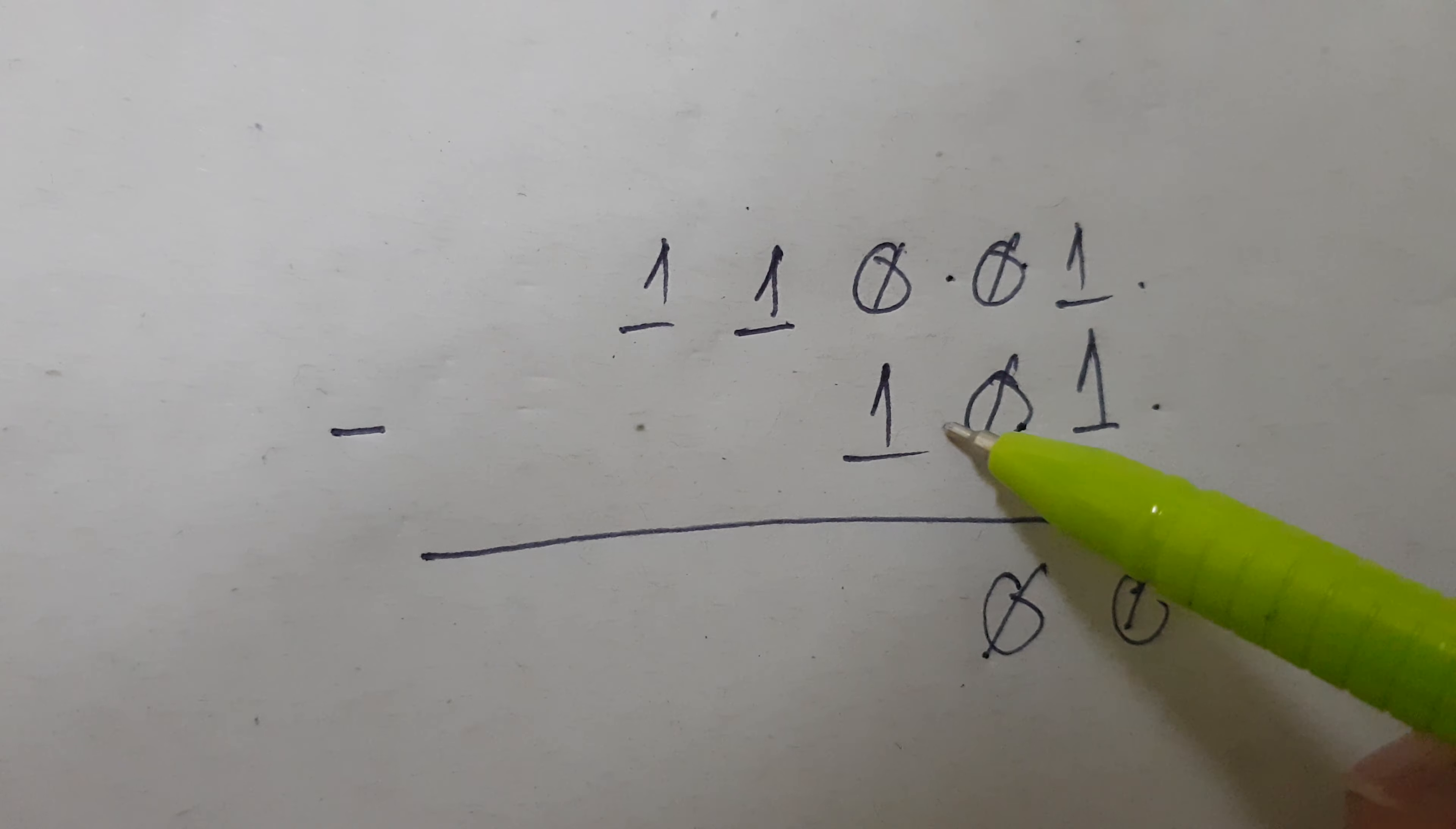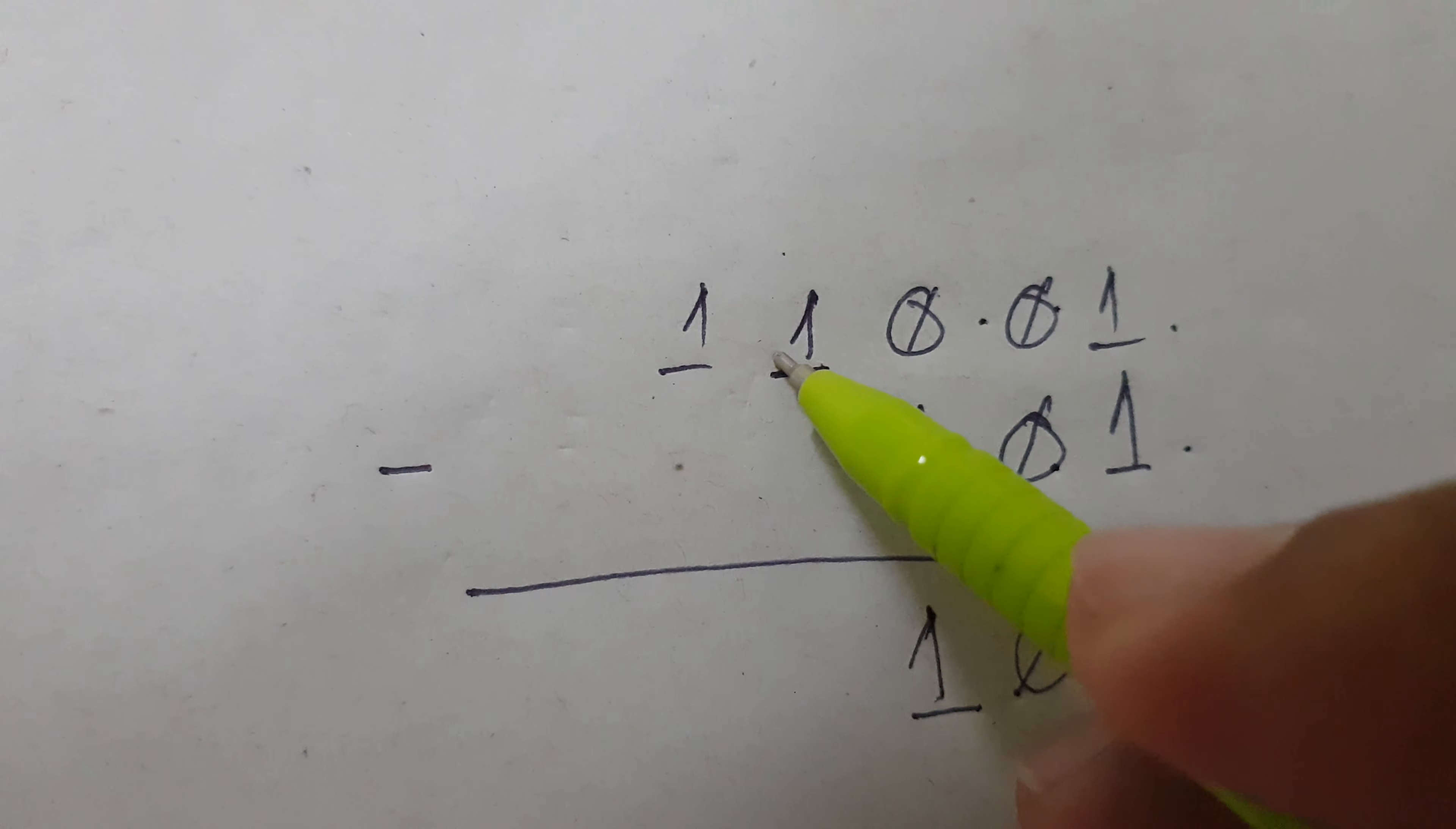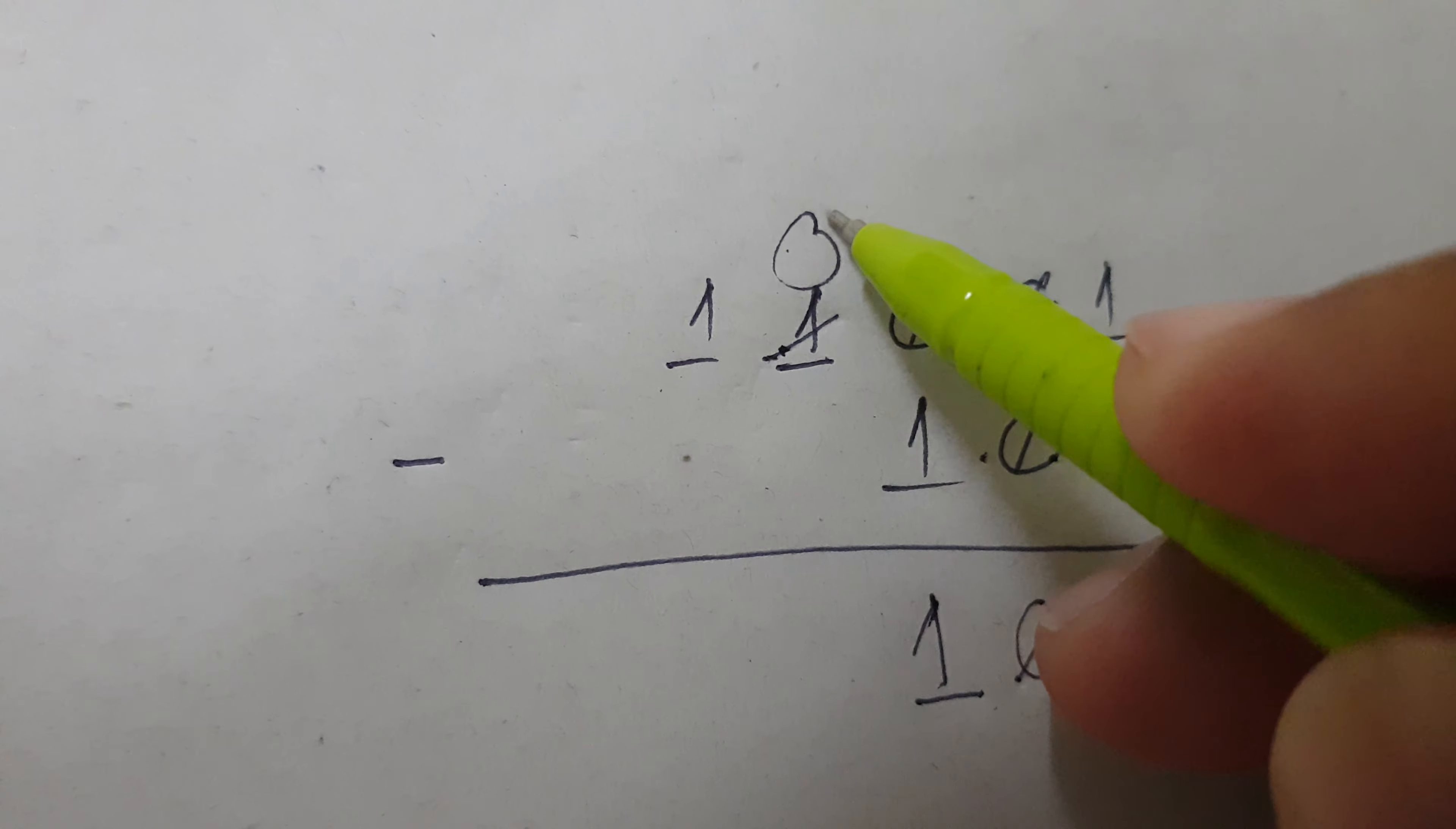0 and 1 is equals to 1. We borrow from the nearest to 1. So it becomes 0.